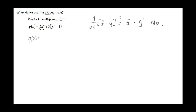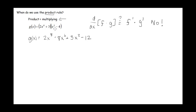So let's foil this out. If I multiply 2x to the 6 times x squared, that's going to give me 2x to the 8th. Then we're going to have minus 8x to the 6th, plus 3x squared, minus 12 — distributing the 3x squared and the minus 4. Now I've got my function and I can use just my plain old power rule on this in order to find the derivative.